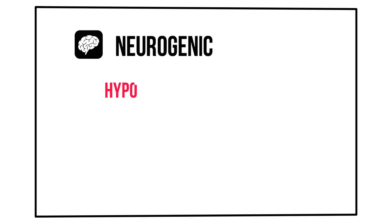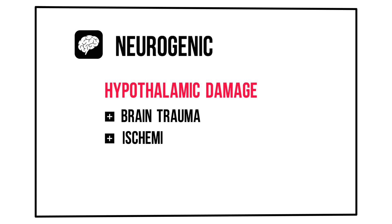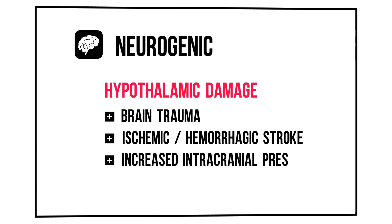Neurogenic causes of hyperthermia are due to damage to your hypothalamus — your thermostat. This can be seen in brain trauma, ischemic or hemorrhagic stroke, or an increase in intracranial pressure.